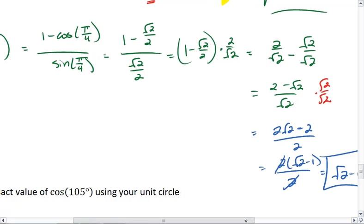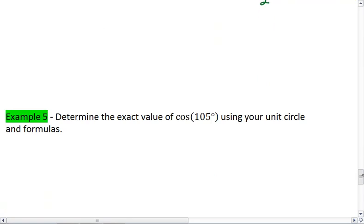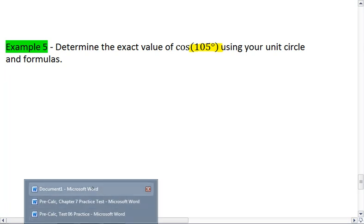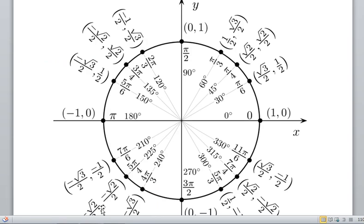A little bit of a lengthy process, but it helps us in this next example, when we're trying to find an angle such as cosine of 105. We can look at our unit circle. We see that there's no 105, but there is a 210 degrees.